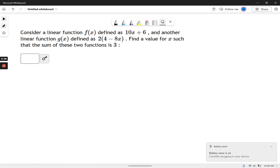So in this example, look what it's saying. It's saying suppose you have a function f of x, defined as this thing, and another function g of x defined as this thing. Find a value such that the sum of these two functions equals 3.